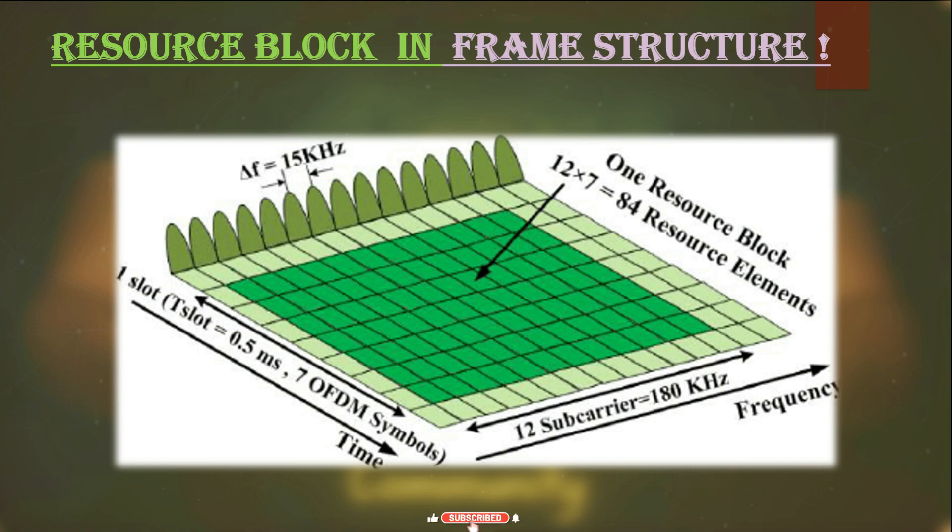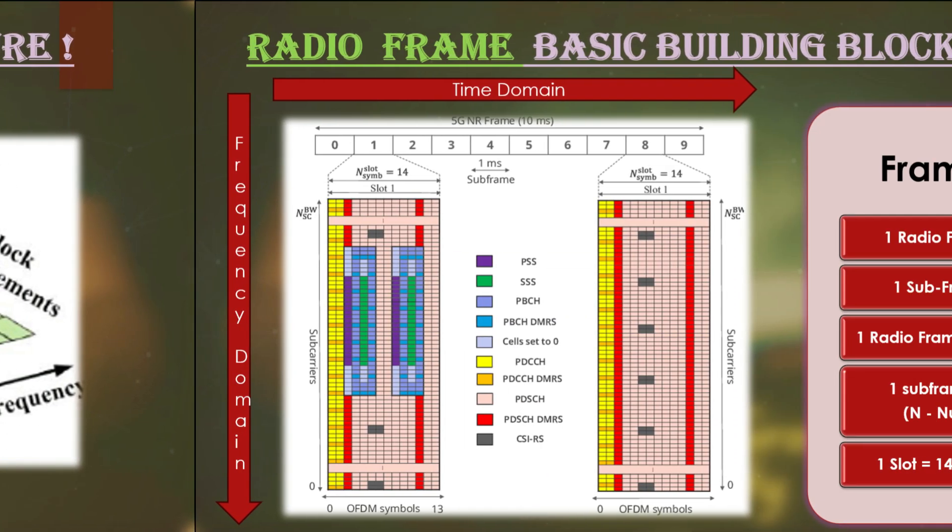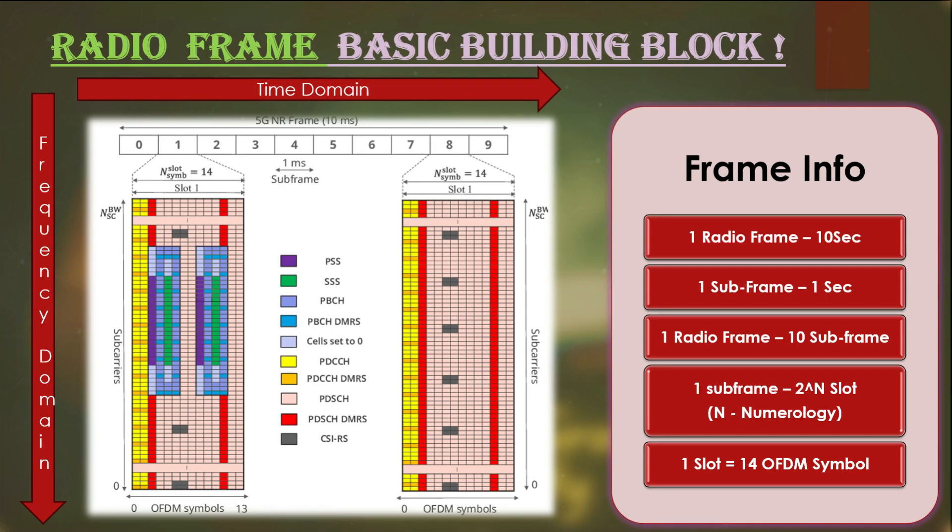Let's see how the physical layer looks like in the time and frequency domain. This structure is 5G physical layer structure and numerology is 15 kHz. You can see here that each and every resource is distributed individually in the time and frequency domain. For reference, view from the top is the time domain and view from the side is the frequency domain.